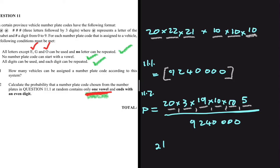Now, the vowel can only occupy the second or third letter position — it cannot be in the first position. So there are two possible arrangements for where the vowel can go. We therefore need to multiply everything by 2, because the vowel doesn't have to be in the second position; it can also be in the third.